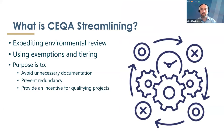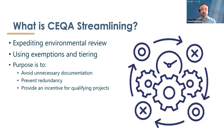As a refresher from the last workshop, streamlining really involves expediting CEQA review through an exemption or reliance on previously adopted environmental documents. We're focused on the latter in this workshop. The purpose of streamlining is to avoid unnecessary documentation and reduce redundancy. There are tiering and streamlining provisions that have been in the CEQA guidelines and statutes for years, but they're just not well utilized. The legislature has passed various laws to provide CEQA incentives and relief for infill projects or projects closer to transit to reduce greenhouse gas emissions.